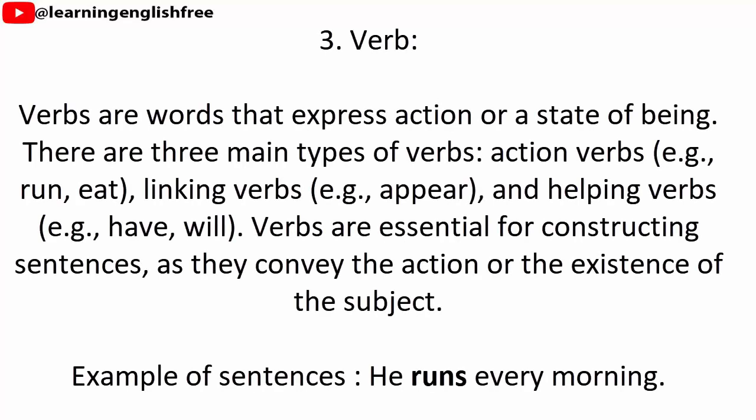3. Verb. Verbs are words that express action or a state of being. There are three main types of verbs: action verbs, e.g. run, eat; linking verbs, e.g. appear; and helping verbs, e.g. have, will. Verbs are essential for constructing sentences, as they convey the action or the existence of the subject. Example sentence: He runs every morning.